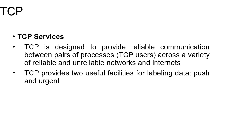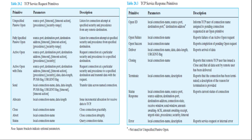As with IP, the services provided by TCP are defined in terms of primitives and parameters. The services provided by TCP are considerably richer than those provided by IP, and hence the set of primitives and parameters is more complex. In the next slide you can see a table listing TCP service request primitives which are issued by TCP user to TCP, and another table listing TCP service response primitives which are issued by TCP to a local TCP user.